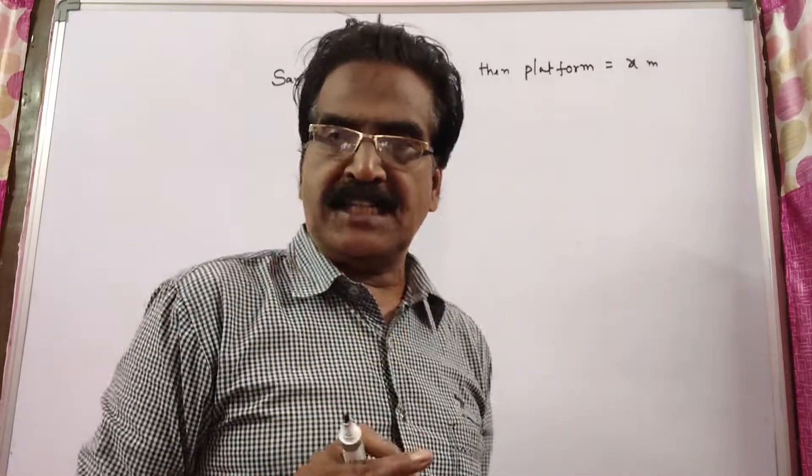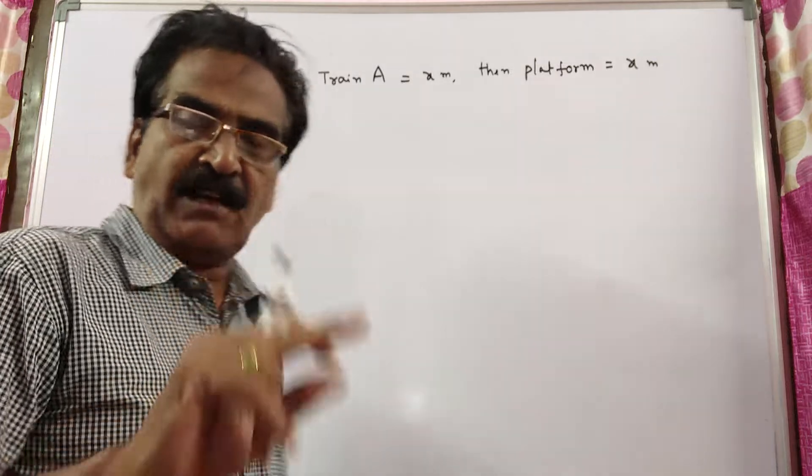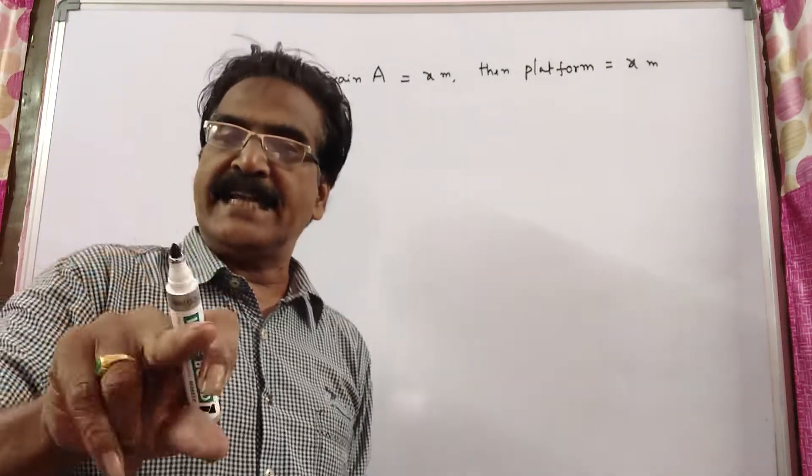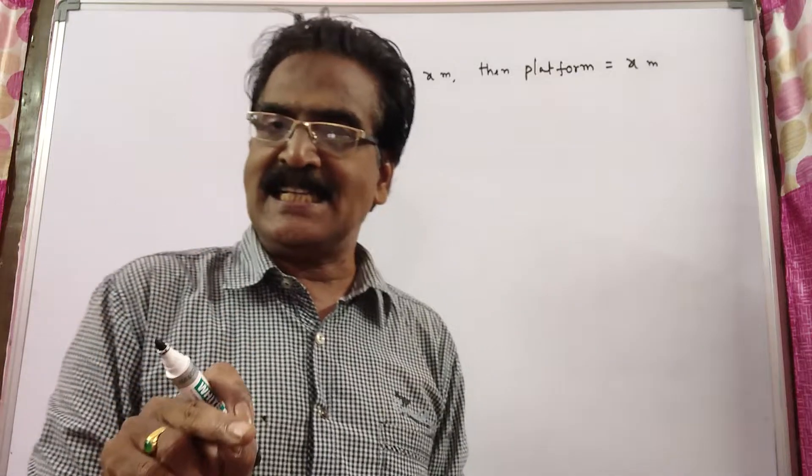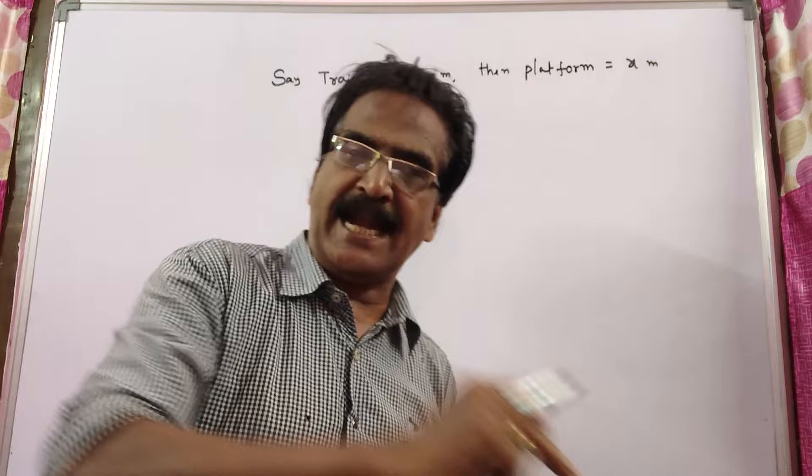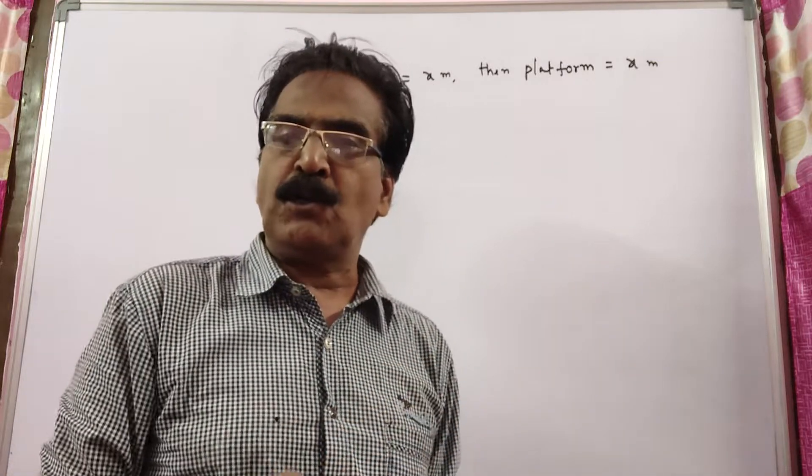From this statement, by doing velocity into time, we get the distance. Here distance means train A is crossing a platform.